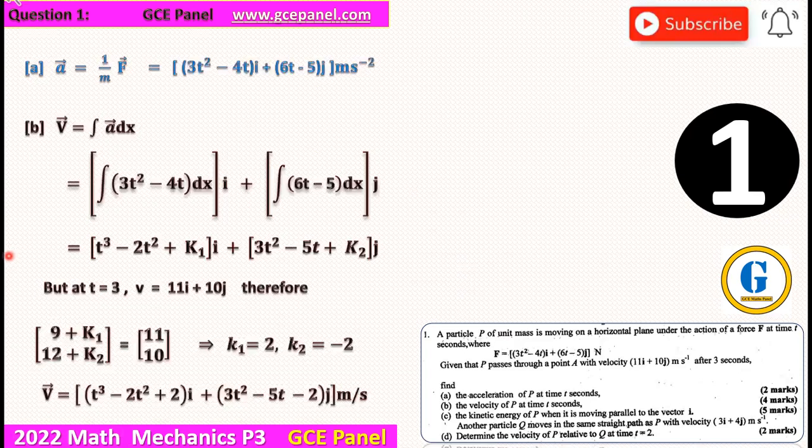Now see, the kinetic energy of particle P when it is moving parallel to the vector I. When this particle is moving parallel to the vector I, what does this imply? When it's moving parallel to the vector I, it means it's moving along the I axis. And when it's moving along the I axis, it means that the J component is zero. It is the J component that is zero, not the I component. Take note of this.